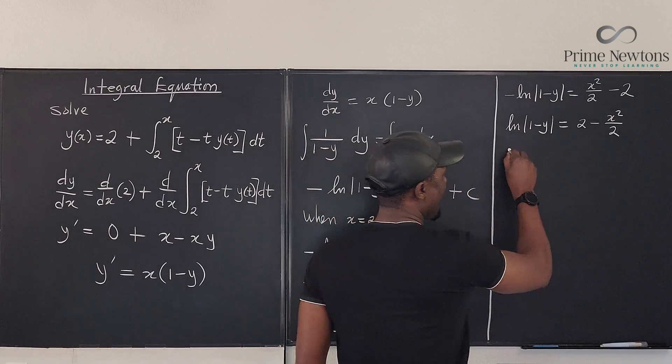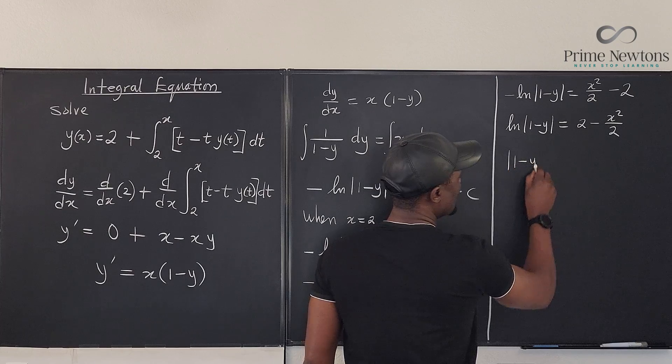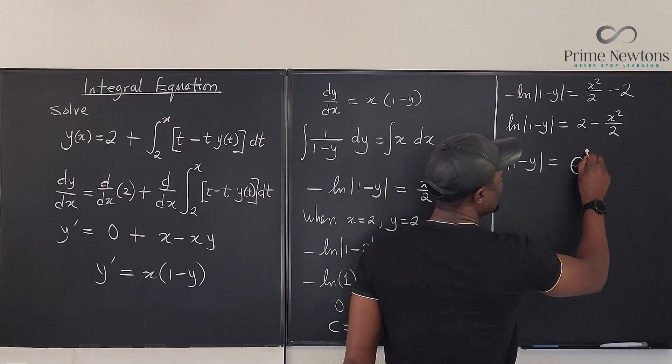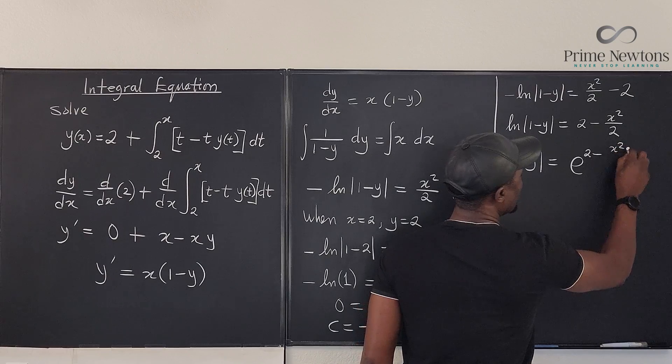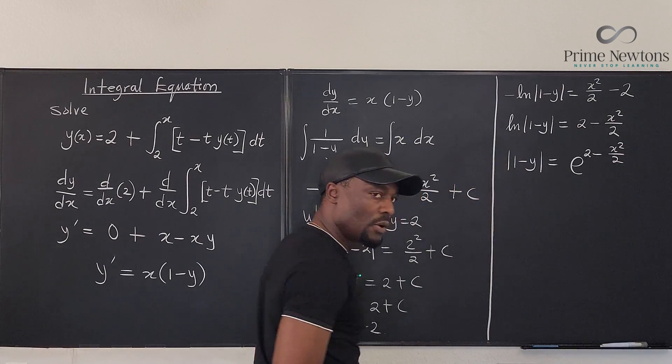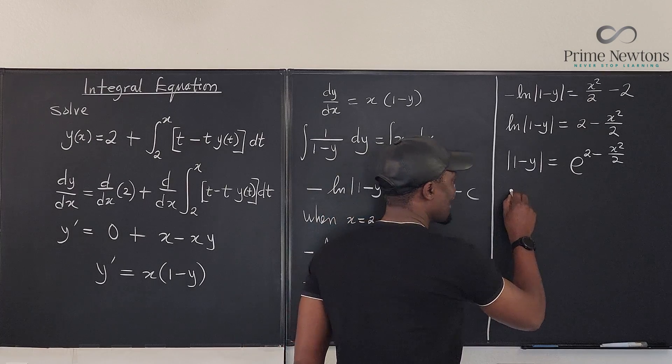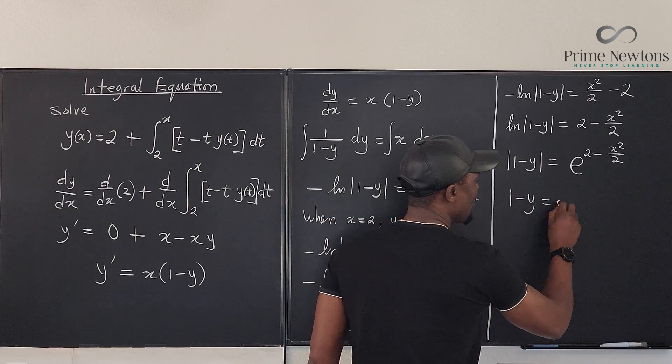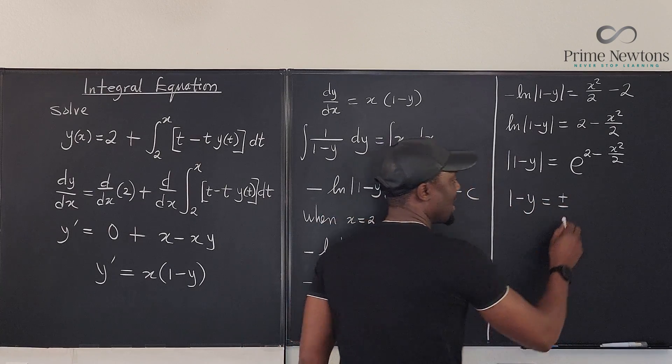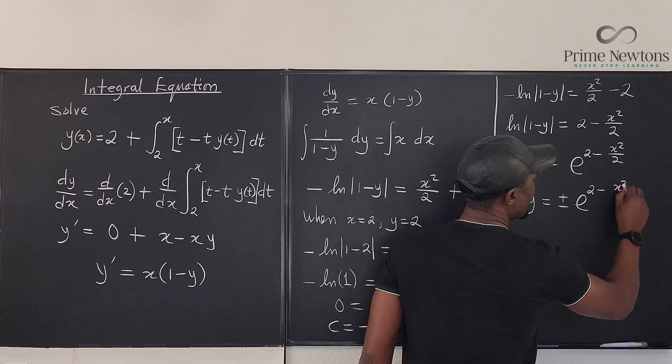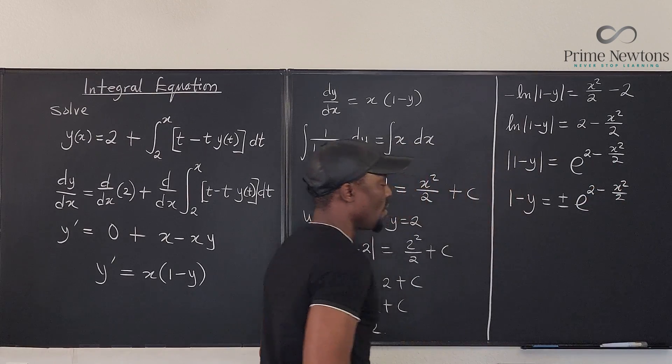You're going to have absolute value of (1 - y) is equal to e to the (2 - x²/2). We're almost done. Let's get rid of the absolute value. And that's going to be (1 - y) equals plus or minus e to the (2 - x²/2).